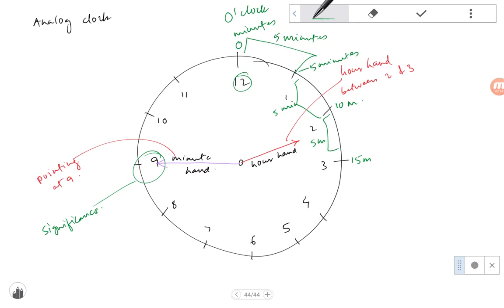If you keep adding five minutes, we'll have twenty, thirty, twenty-five, thirty, thirty-five, forty, forty-five, fifty and fifty-five. So nine over here represents forty-five minutes.